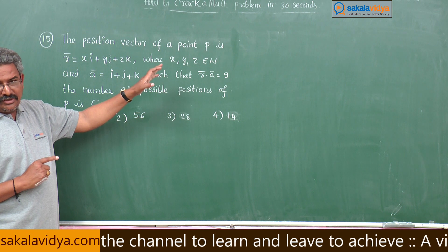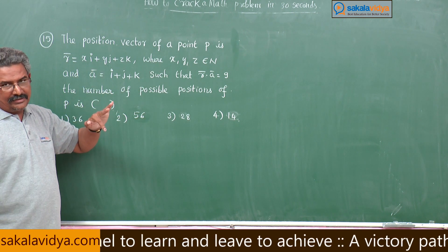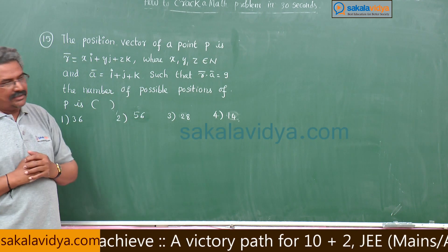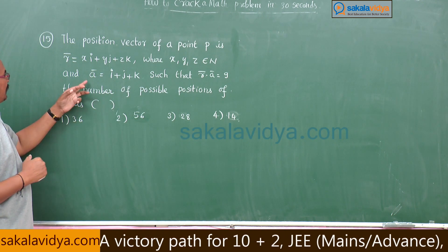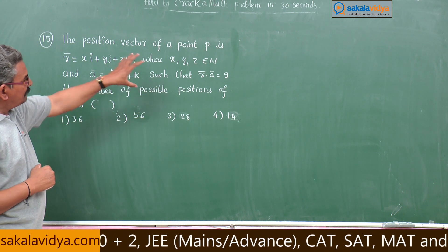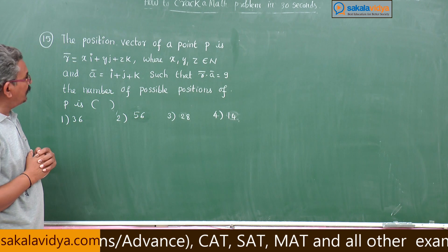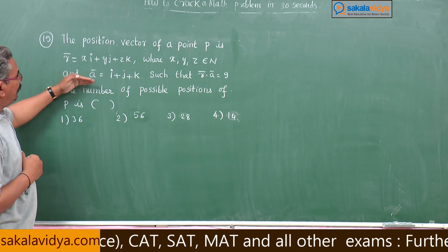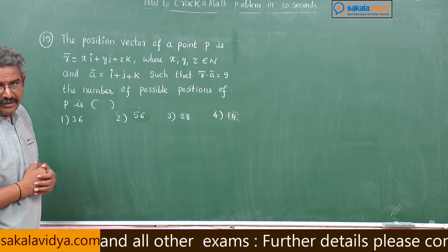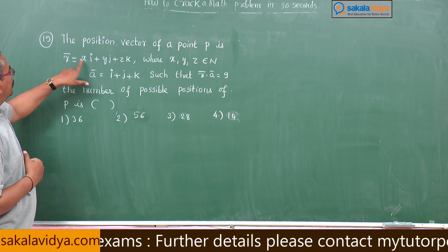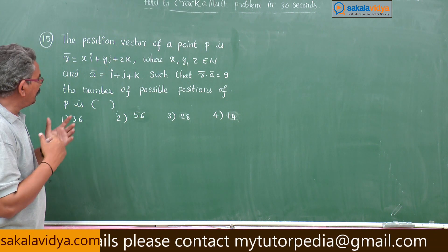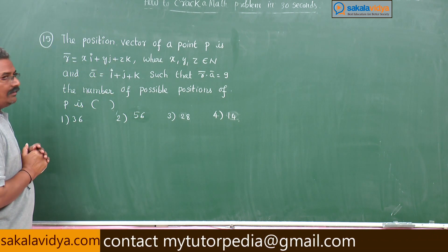Since x, y, z are natural numbers, x may be 1, 2, 3..., y may be 1, 2, 3, 4..., z may be 1, 2, 3, 4... and so on. Now ā = i + j + k is fixed, such that r̄ · ā = 9. The dot product between r̄ and ā gives x + y + z = 9. The number of possible positions of P means we need to find all possible x, y, z values that determine r̄.